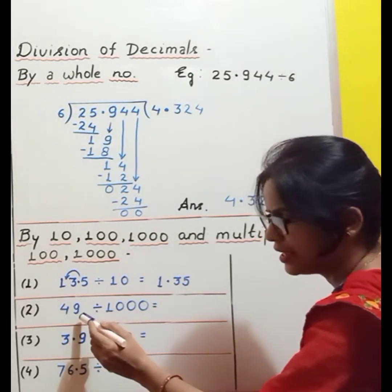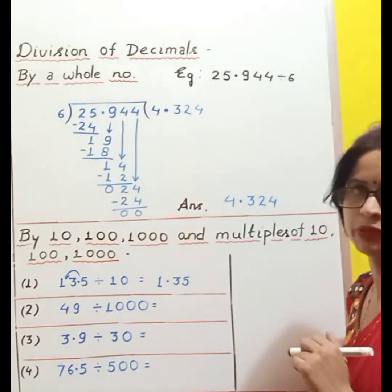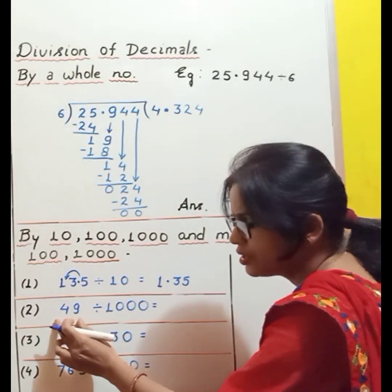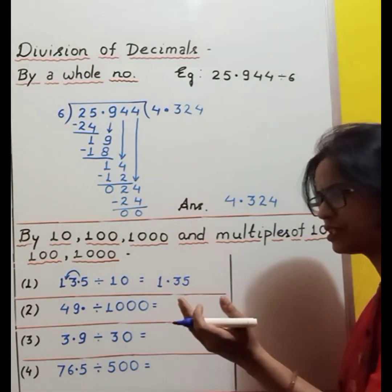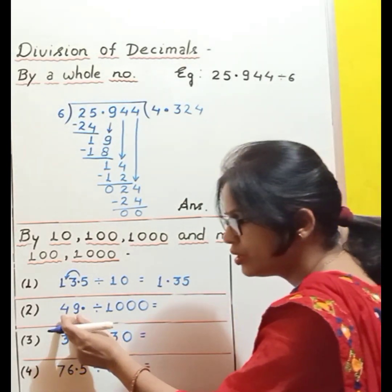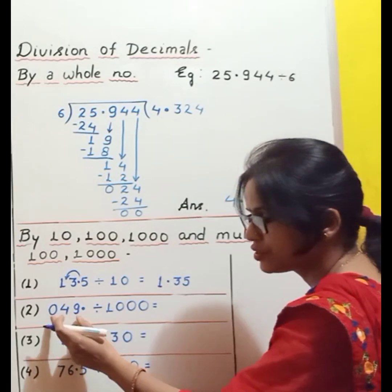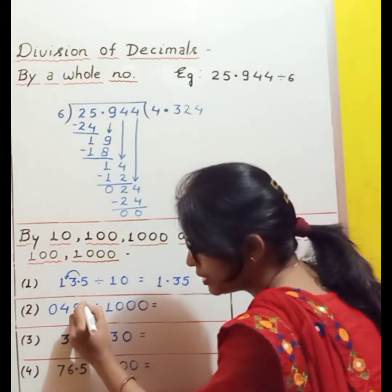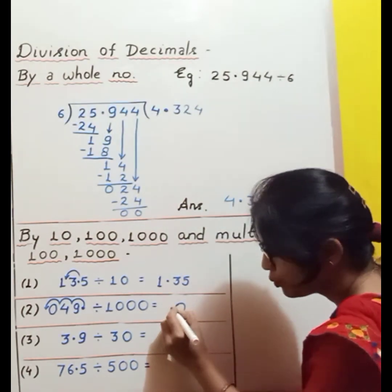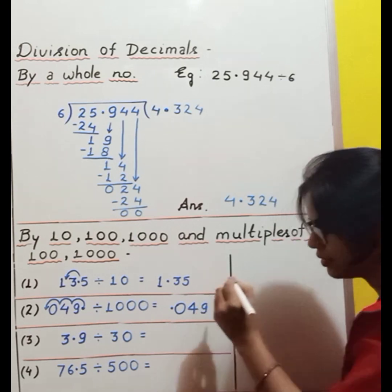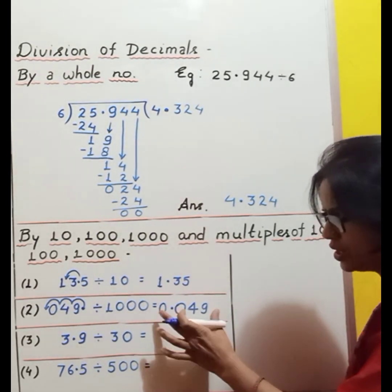Next: 49 divided by 1000, meaning 3 zeros. So the decimal will be shifted to the left-hand side by three places. Now, where is the decimal? It is a whole number, so the decimal is at the end. We need to shift it three places left, but there are only two digits. So we can add a zero on the left-hand side to get three digits. Now we can shift the decimal three places: 1, 2, and 3. Decimal will be here, giving 0.049. We put 0 before the decimal to show the whole number part is 0. So the answer is 0.049.